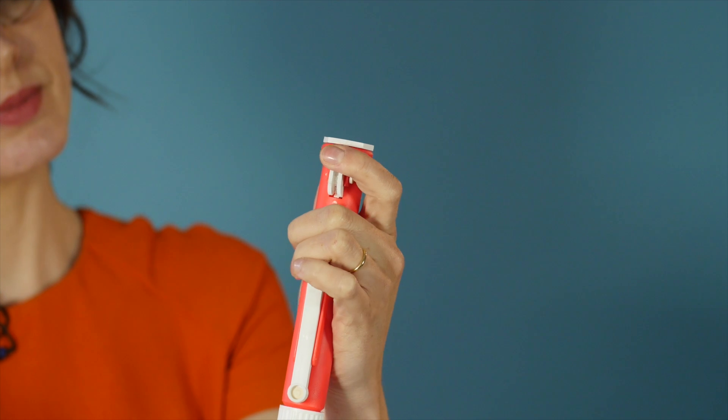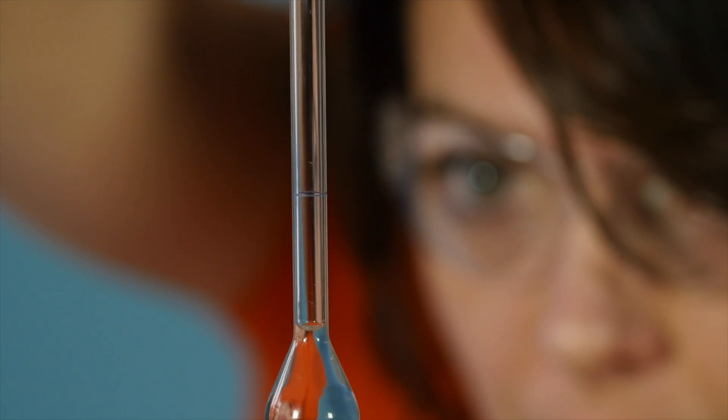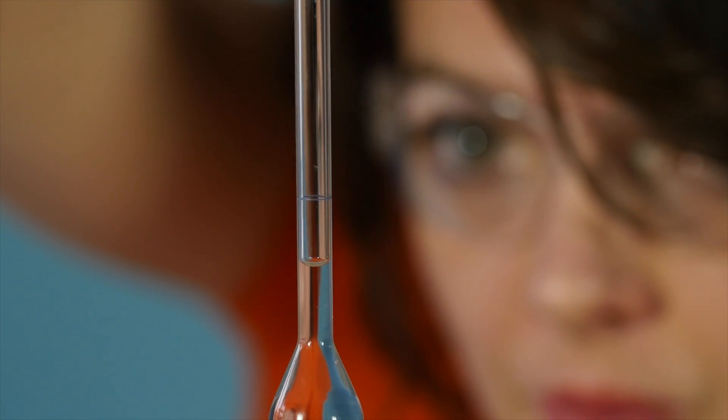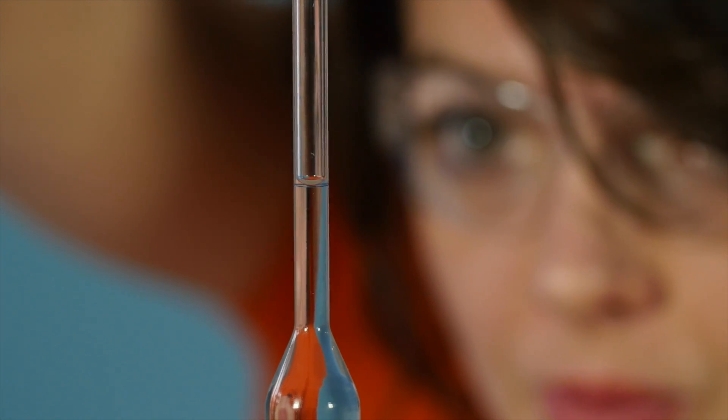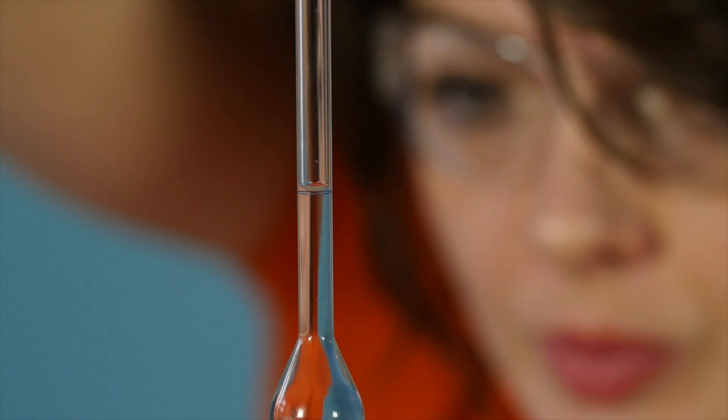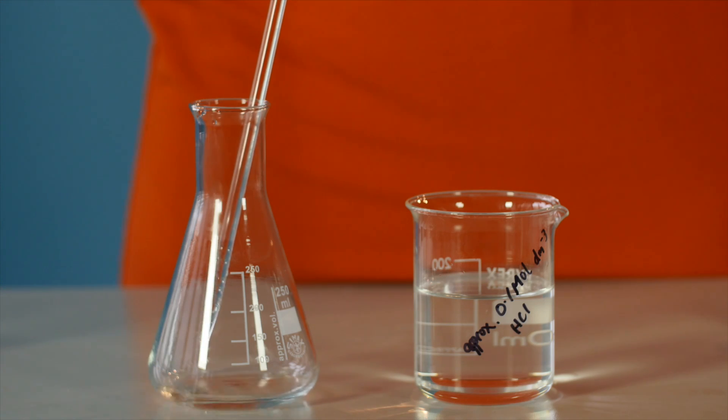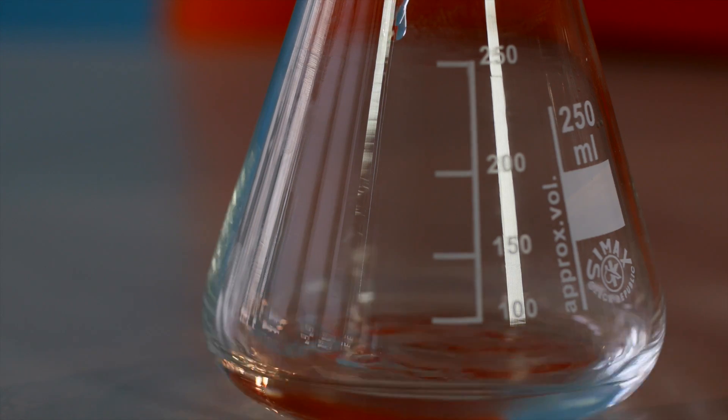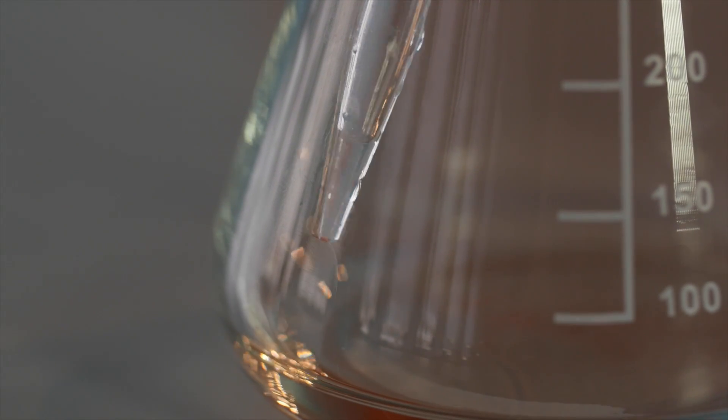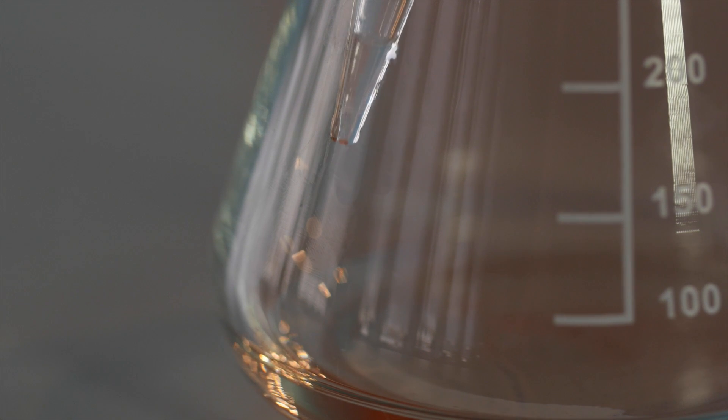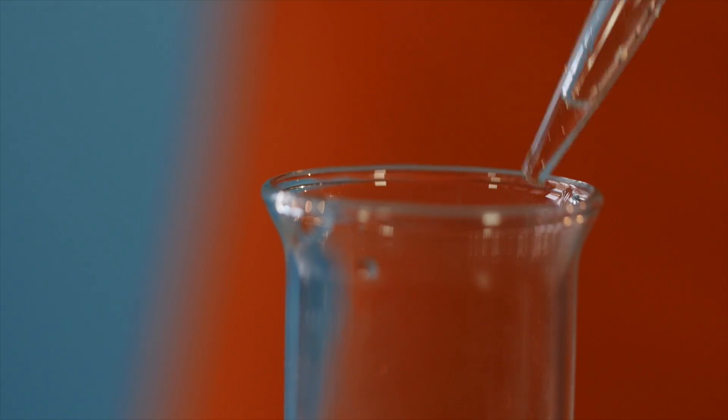Using the pipette and the pipette filler, transfer exactly 25 cm³ of the hydrochloric acid solution into the clean conical flask. Allow the pipette to drain for several seconds after it has been emptied. Then touch the tip against the side of the flask. Do not force the last drop of liquid from the tip of the pipette.